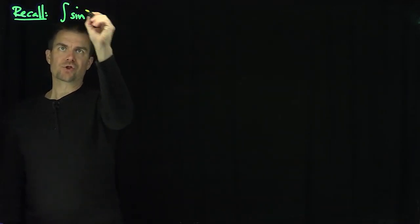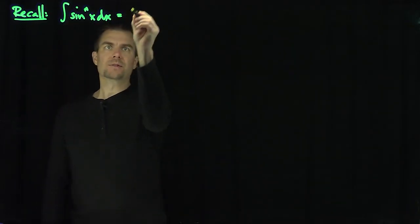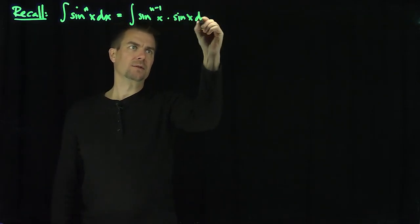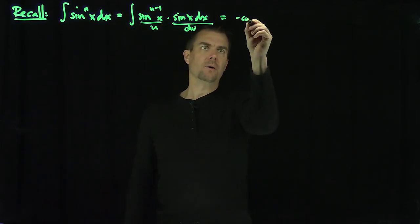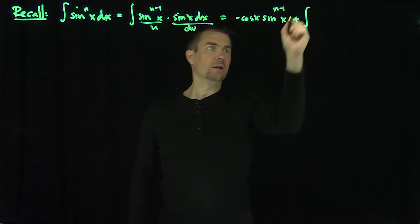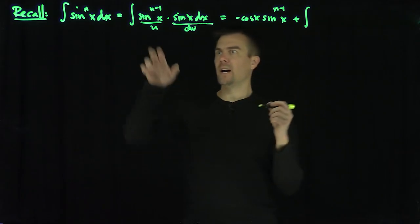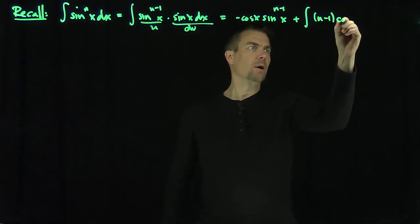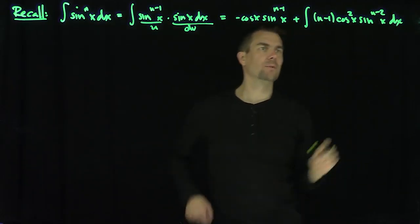To do that, we're going to use this recursion relationship. The integral of sinⁿ(x) dx can be written in terms of itself. Namely, this is the integral of sinⁿ⁻¹(x) times sin(x) dx. If I let that be my dv and this be my u, this becomes negative cos(x) sinⁿ⁻¹(x) plus the integral, and then it's going to be a plus cosine, and then (n−1) cosines, so I'm going to have cos²(x) times sinⁿ⁻²(x) dx.